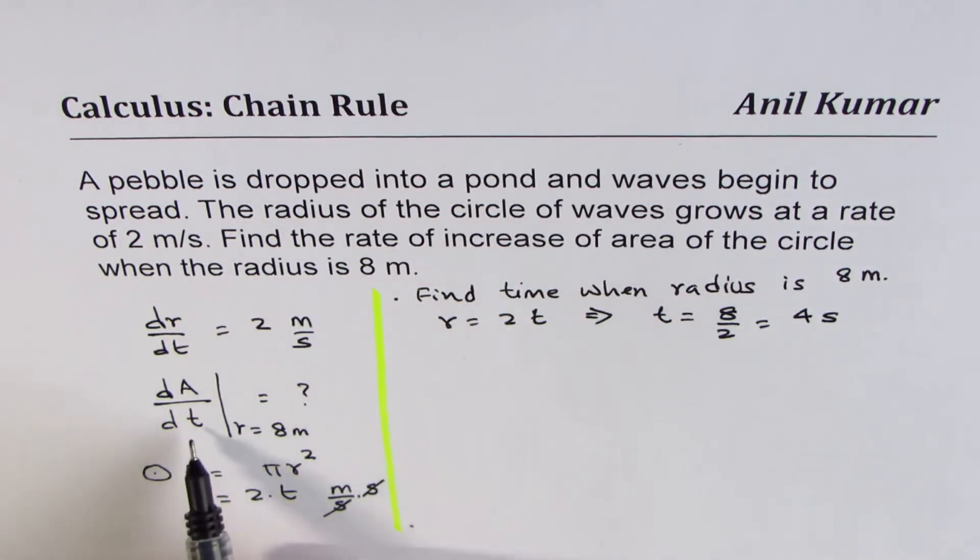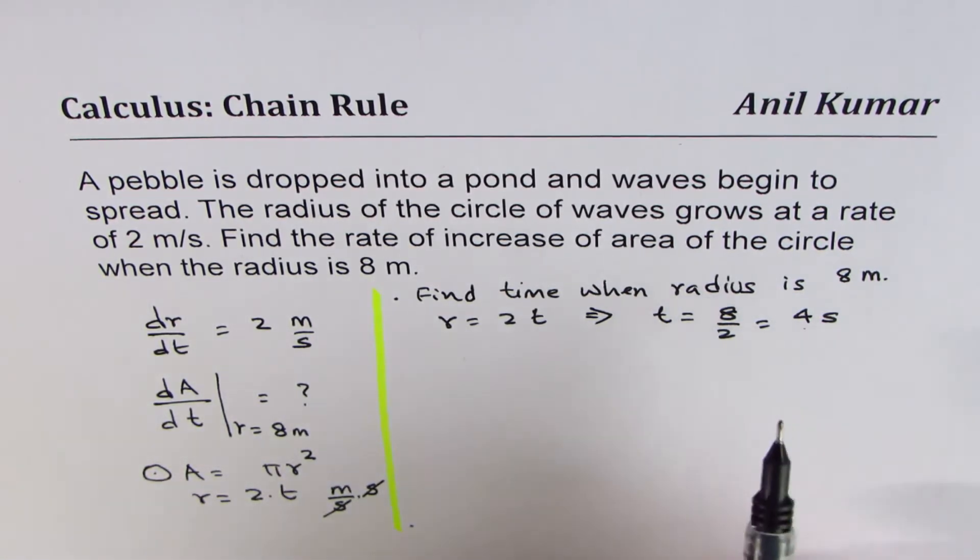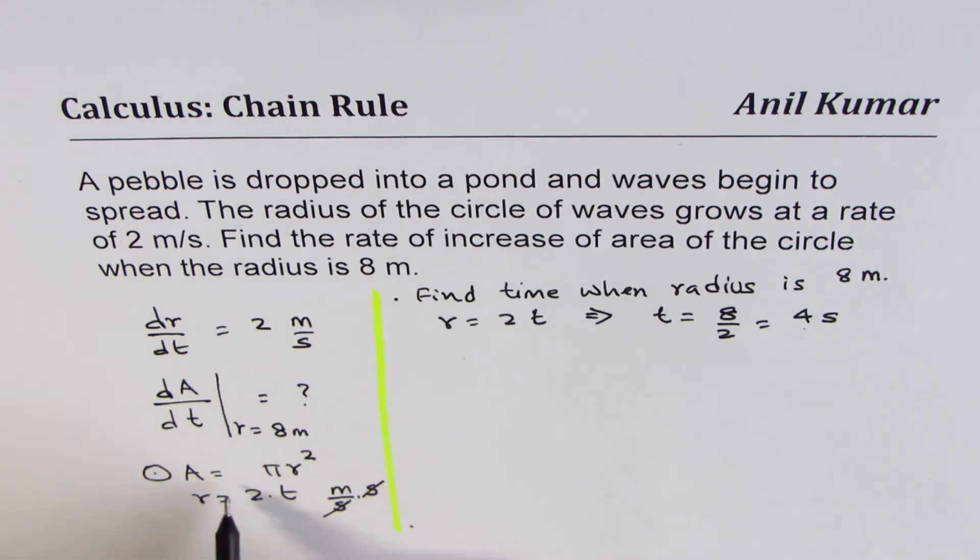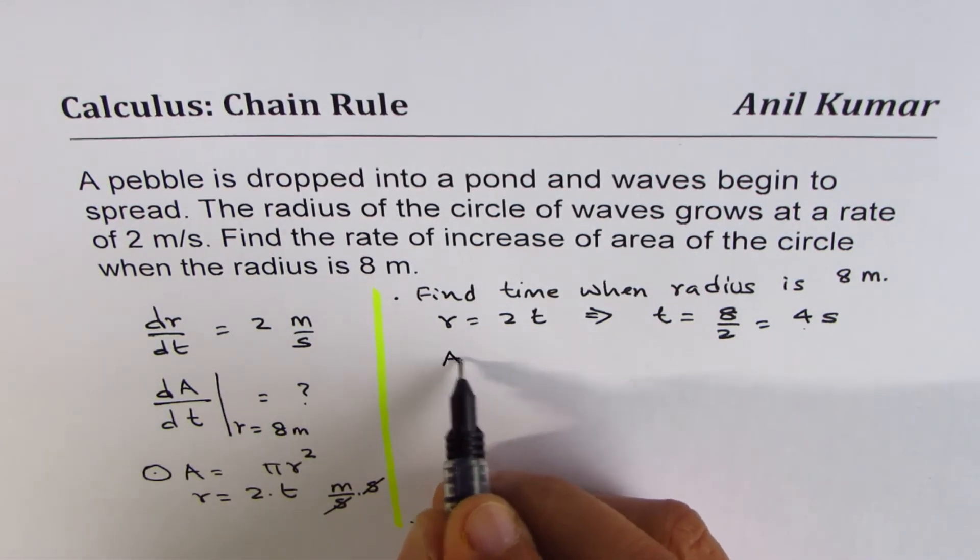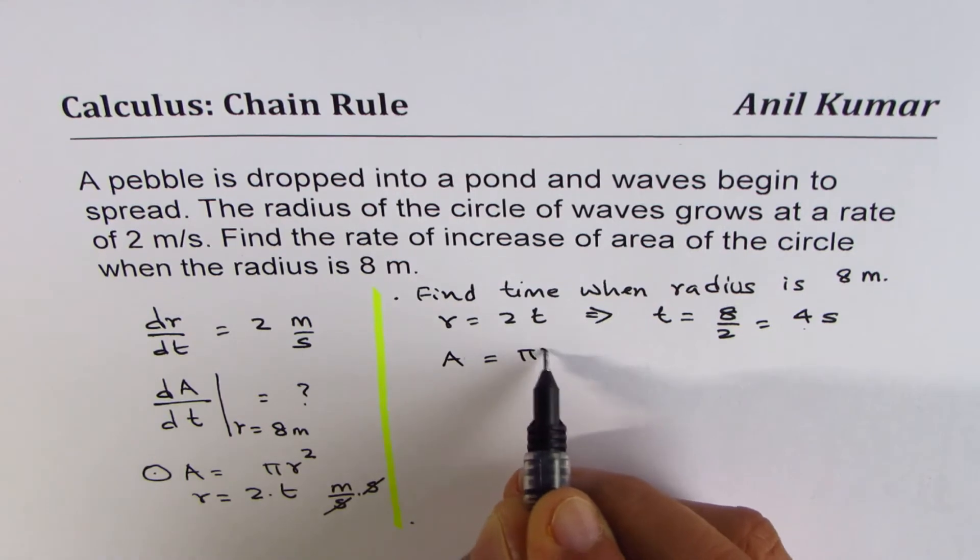So we need to find change in area when radius is 8 meters, or you can say time is 4 seconds. Now we know the formula for area. For a circle, area is pi r squared.